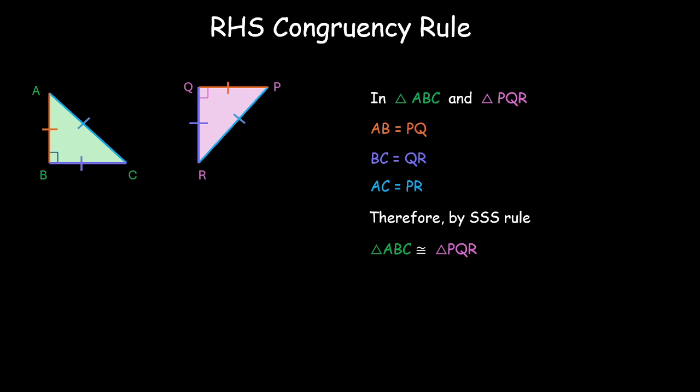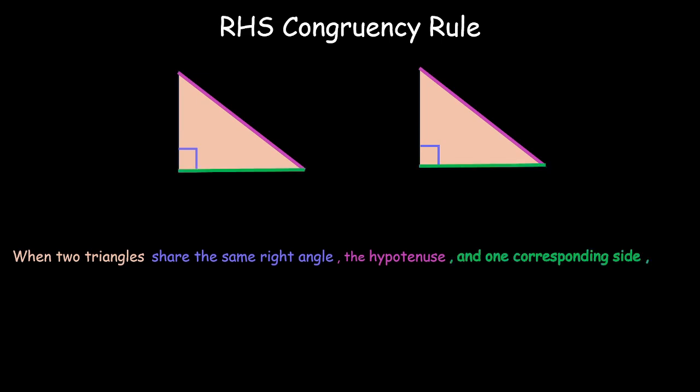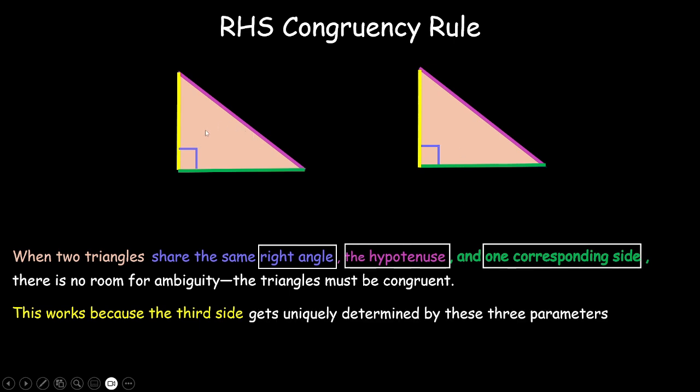So, now we are kind of getting the logic here. RHS rule works because when we have two triangles sharing the same right angle, the hypotenuse and one corresponding side, there is no room for ambiguity. The triangles must be congruent and that is because the third side gets uniquely determined by these three parameters.